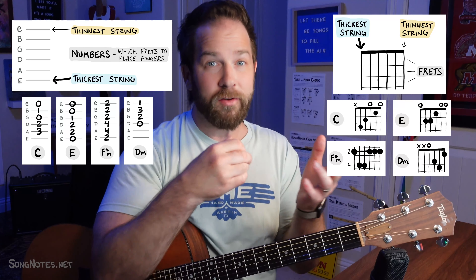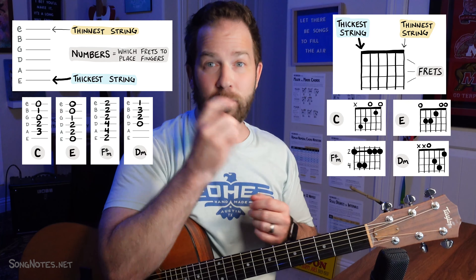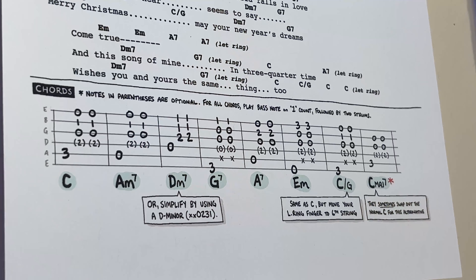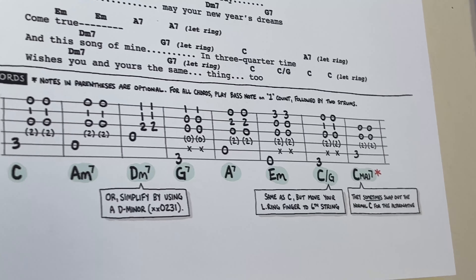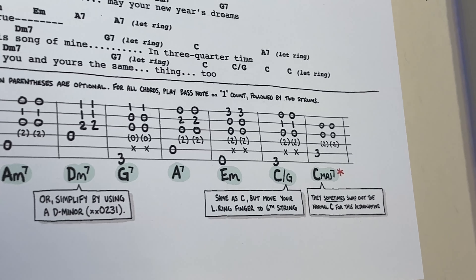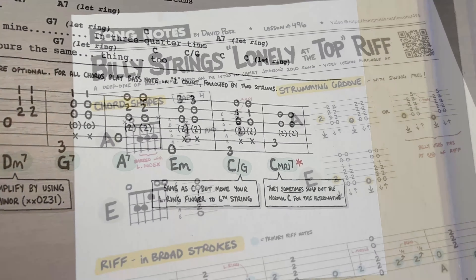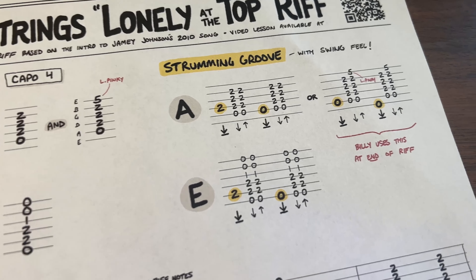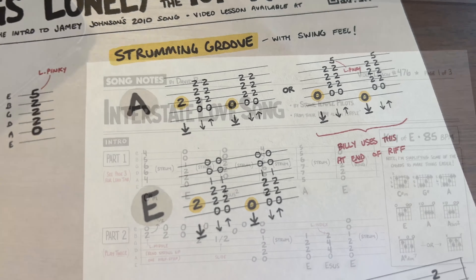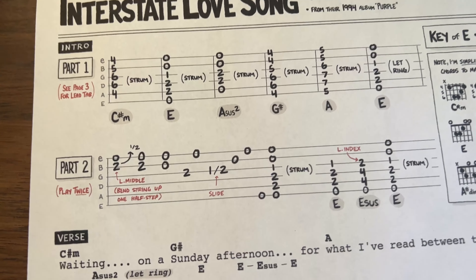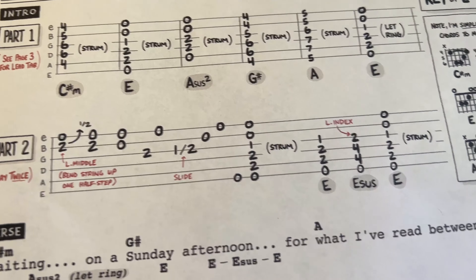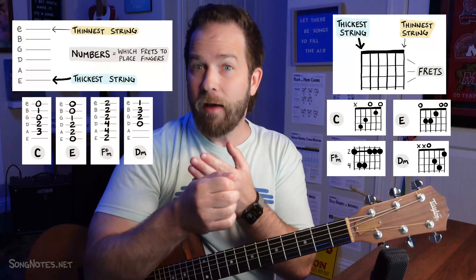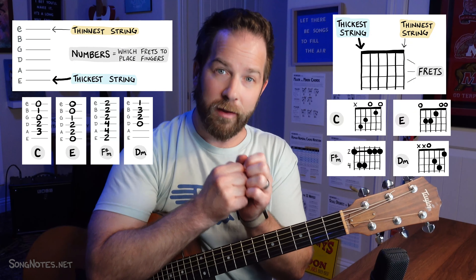Both of these are different, and there are places where I like to use one more than the other. For example, with tabs you're able to be a bit more specific and prescriptive about which exact strings you're playing. So maybe you want to show that you strum the bass note of a chord and then strum it a few times, or maybe there's a lick that you play leading into a chord or just after a chord. Tabs are great for that.